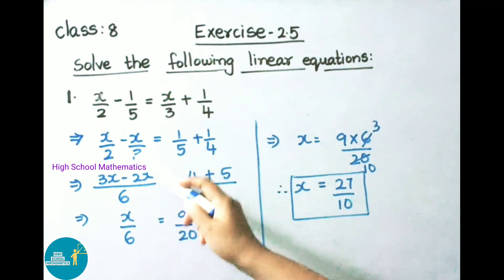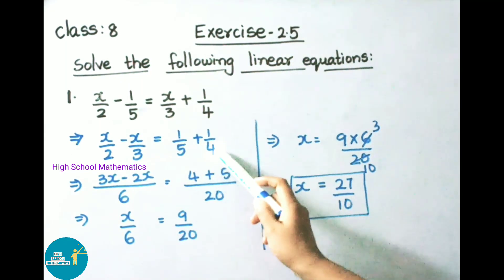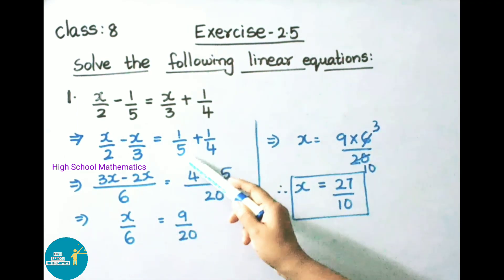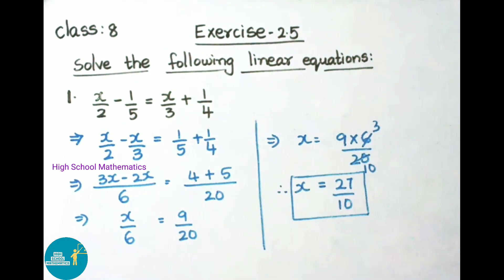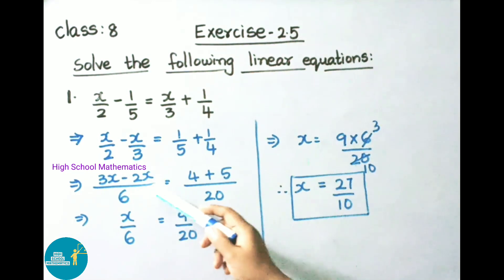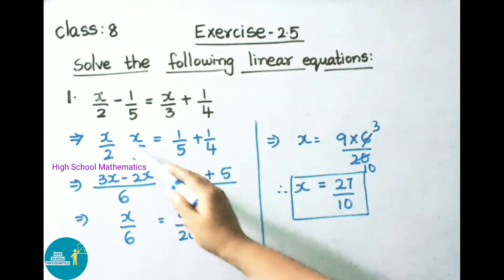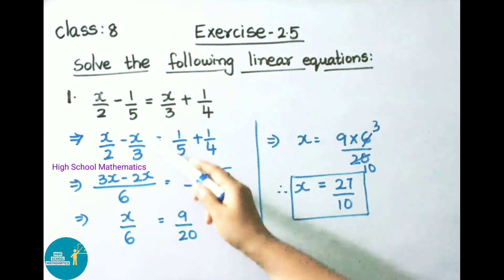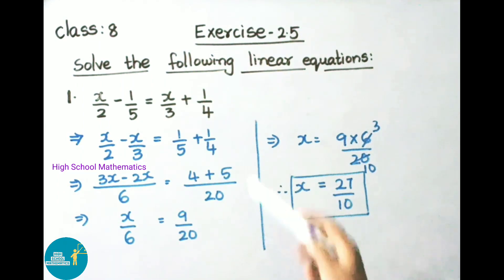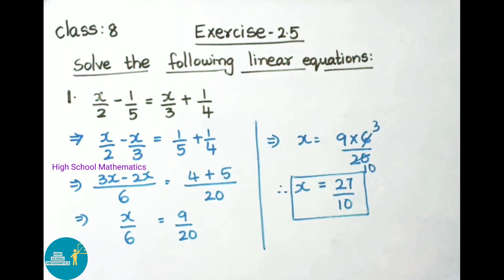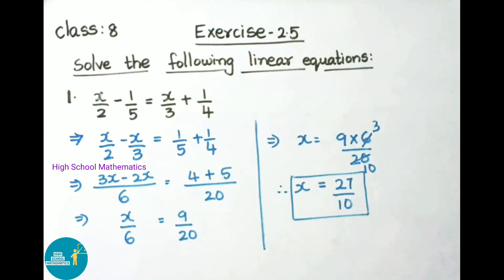We are going to find the LCM for these two denominators. For 2 and 3, LCM is 6, and for 5 and 4, LCM is 20. So we write the LCM value in the denominator. Now cross-multiplying the numerator: 3x - 2x = 4 + 5, giving x/6 = 9/20.